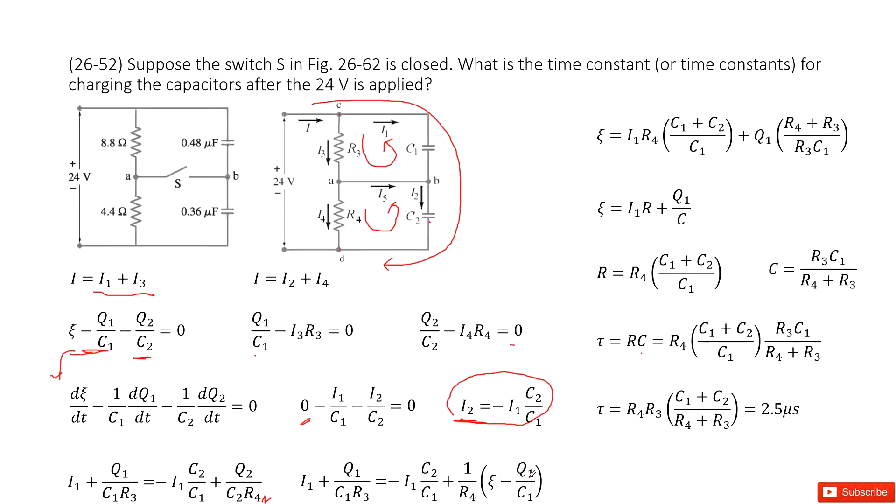So epsilon minus V1, V1 can be written as Q1 divided by C1. Now we can reorganize this equation. We get the equation looking like this one.